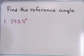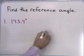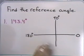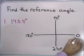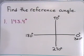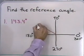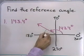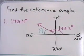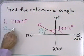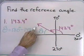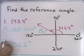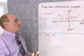Problem number one: find the reference angle for 143.4 degrees. Drawing a picture — this is 0, 90, 180, 270, and 360 degrees. Since 143.4 degrees terminates in quadrant two, the reference angle is this angle between the terminal side and the x-axis. The reference angle is 180 degrees minus 143.4 degrees, which gives 36.6 degrees. That is the reference angle for 143.4 degrees in standard position.